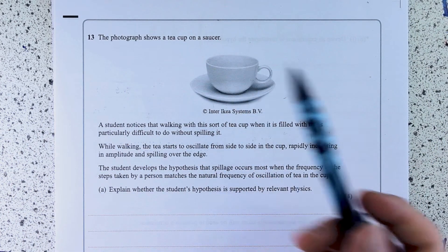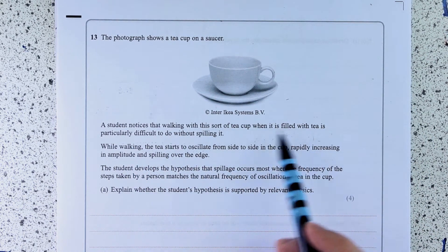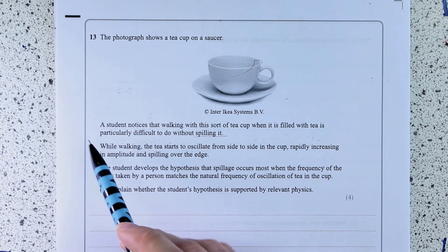The photograph shows a cup of tea on a saucer. A student notices that walking with this sort of cup of tea when it's filled with tea is particularly difficult to do without spilling it. So it's going to slosh over the side.